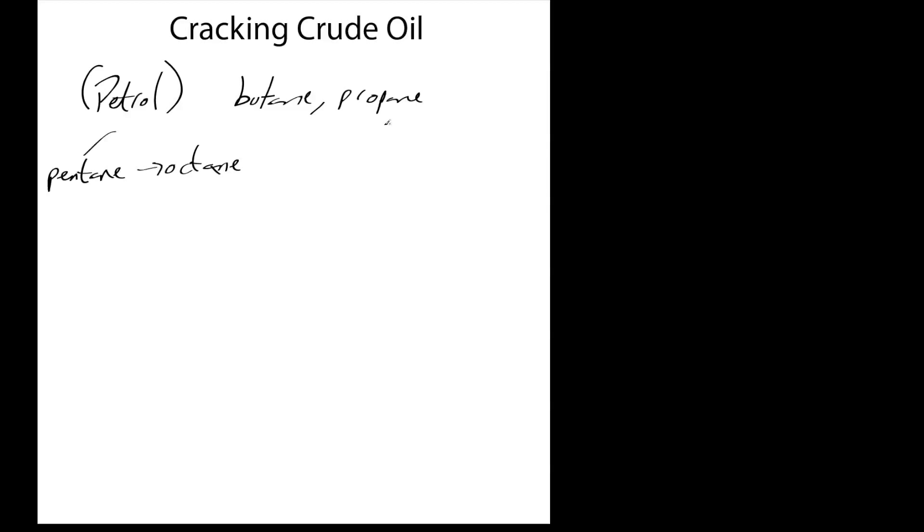Basically, we're dealing with small hydrocarbons following the formula C_nH_{2n+2}. For example, C3 would be C3H8 (2 times 3 is 6 plus 2 equals 8), and C4H10, and so on.